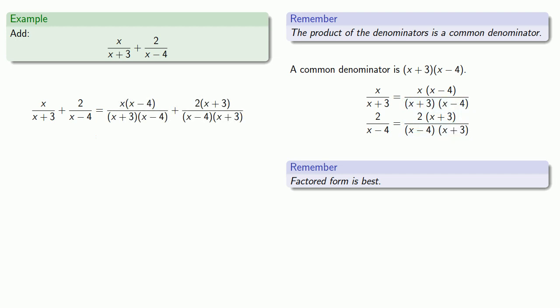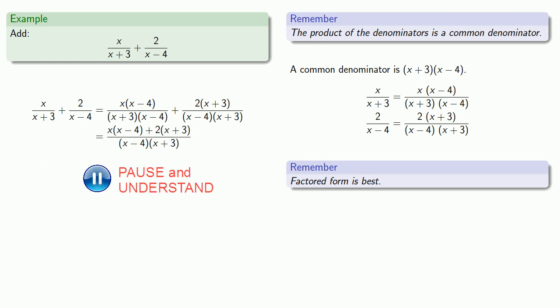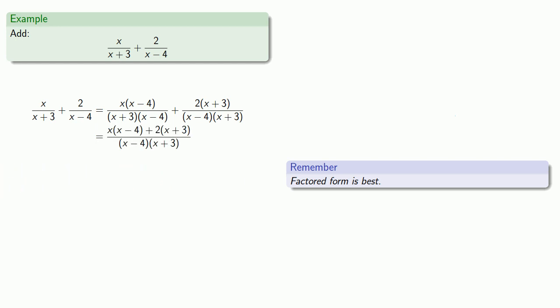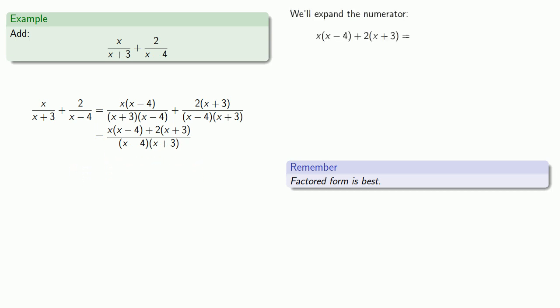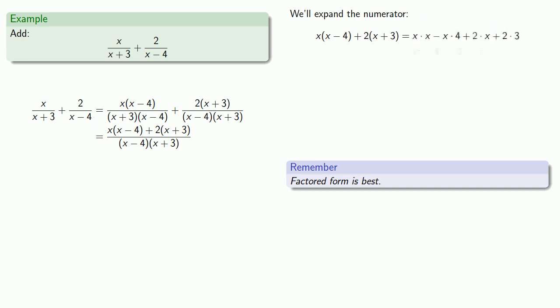And since the denominators are now the same, we can add the numerators. While factored form is best, our numerator is not in factored form because it's not a product. So we'll expand that out and collect like terms, giving us our numerator. Our denominator is written as a product, and since factored form is best, we'll leave it in this form.